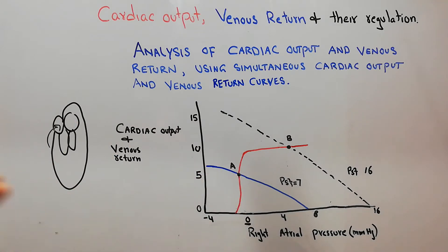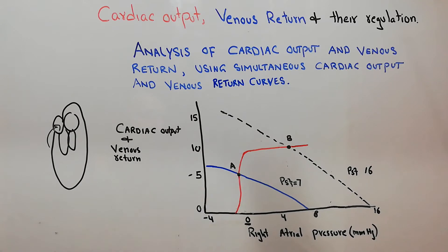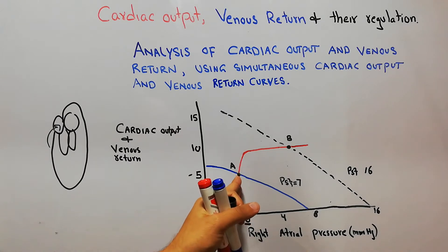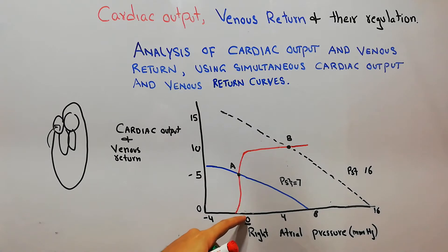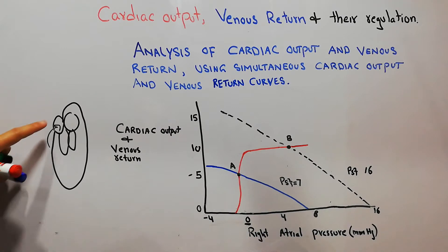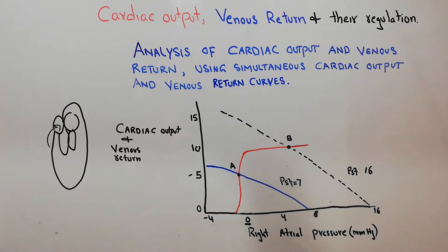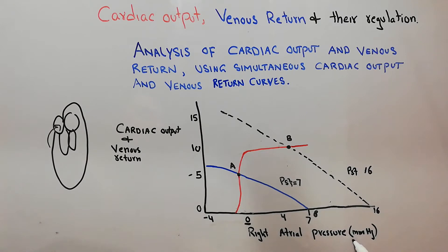At a right atrial pressure of zero, venous return is maximum — 5 liters per minute in a normal human being without any pathology or sympathetic/parasympathetic stimulation. If the right atrial pressure starts increasing, the venous return will start decreasing. When the right atrial pressure reaches 7 mm of mercury, the venous return will have decreased to zero.